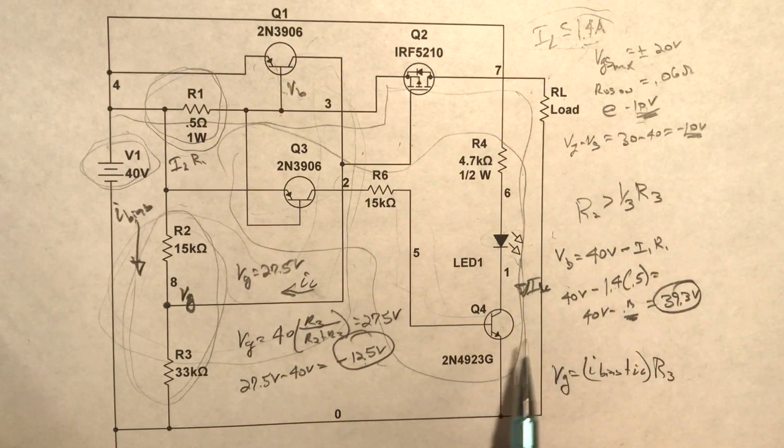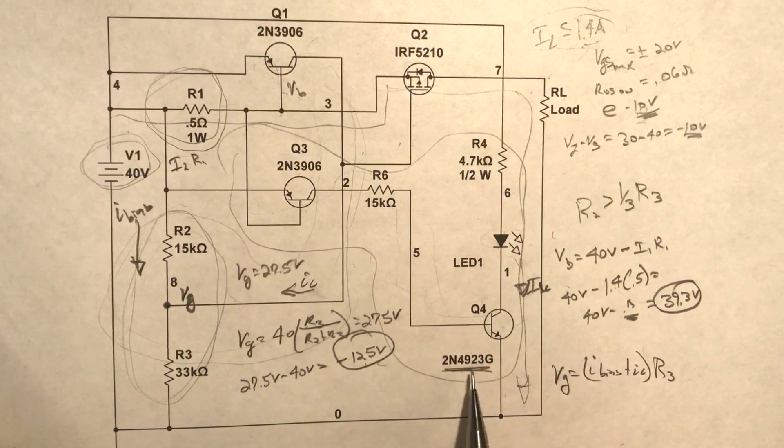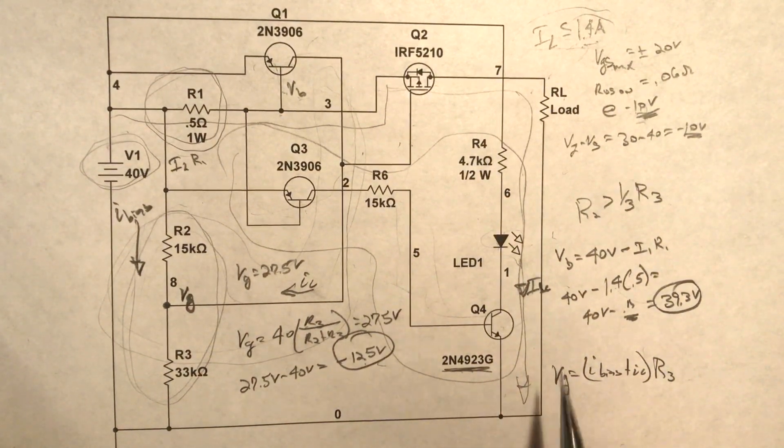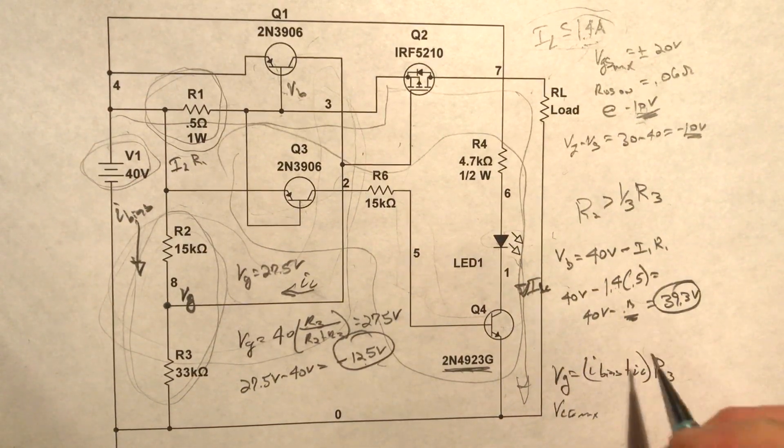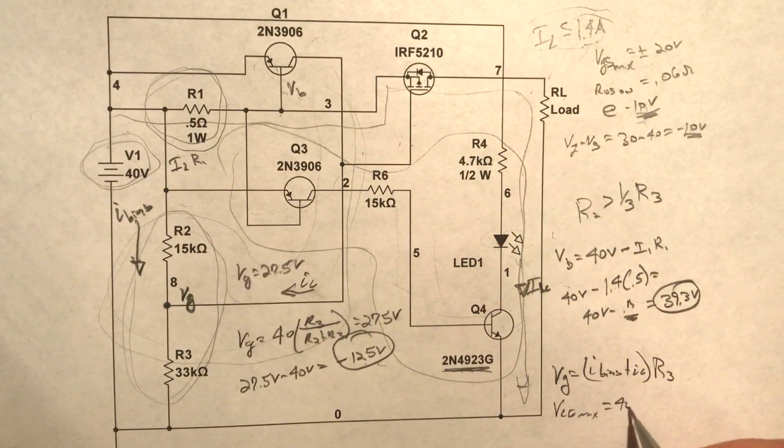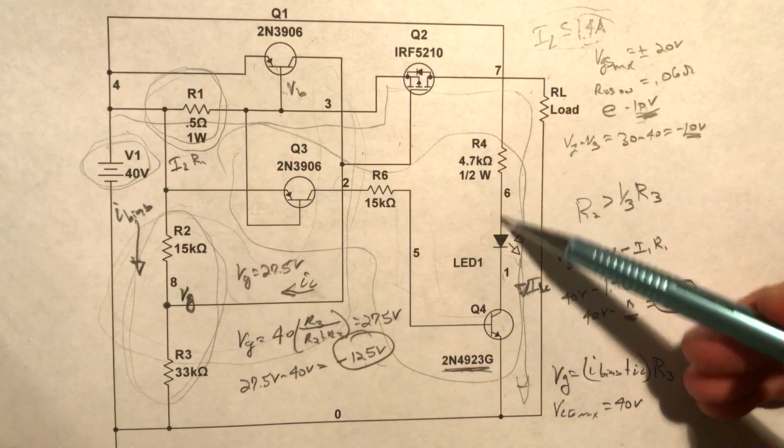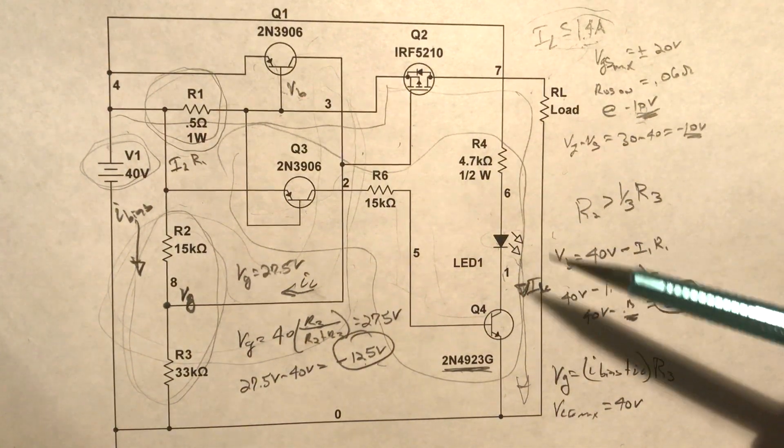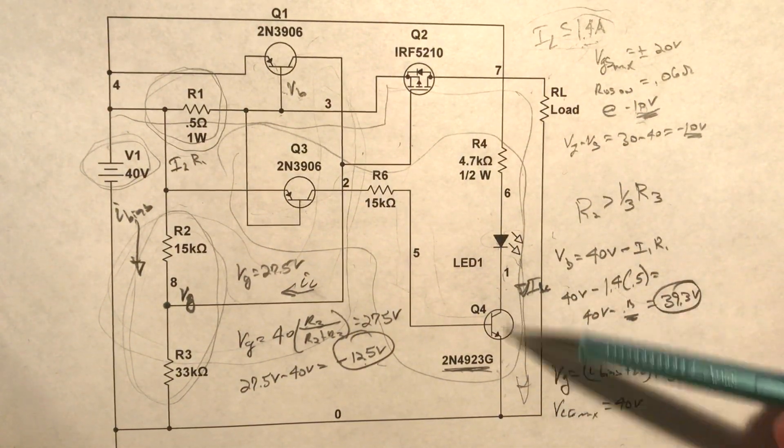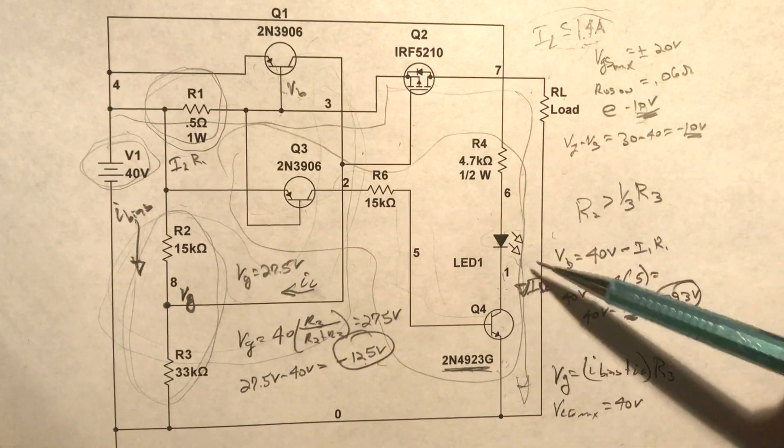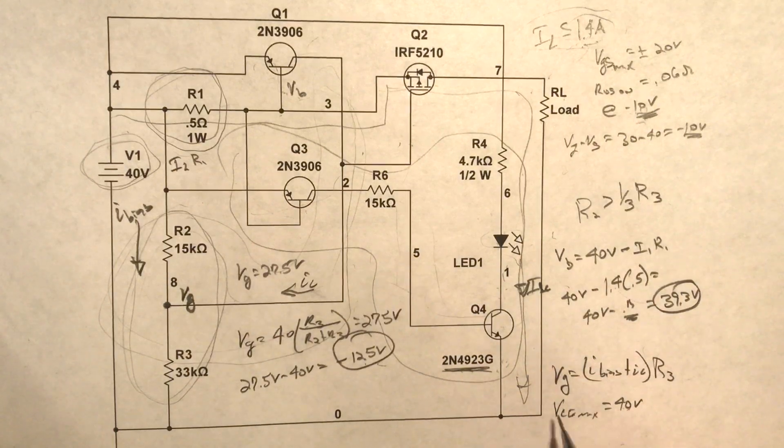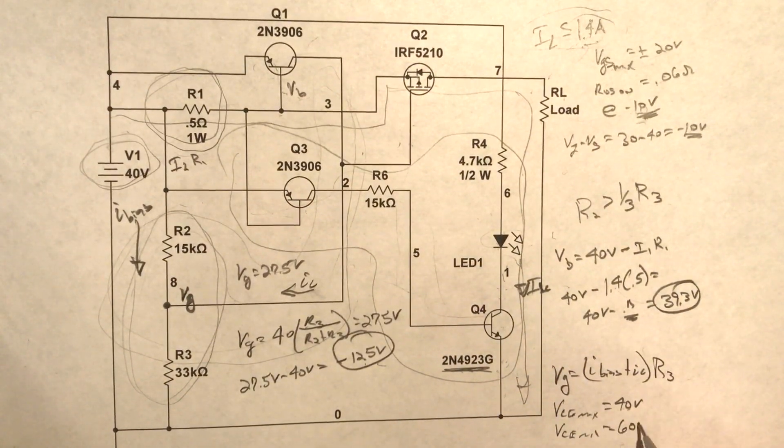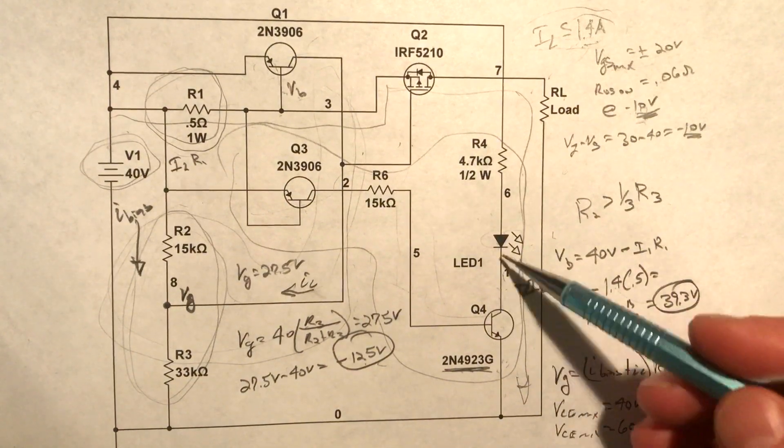One point I should mention here is this guy. I didn't choose a 2N3904 because I think the V sub CE max—or I know for the 3904 is equal to 40 volts. And even with this diode drop here, the collector to emitter voltage is really really close to 40 volts and it's probably best not to use this. The V sub CE max for this 2N4923 is equal to 60 volts which gives us a real good safety margin.